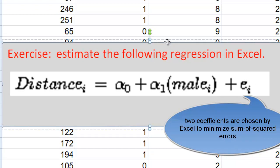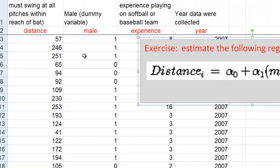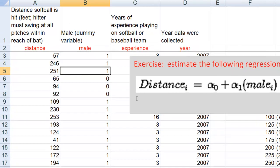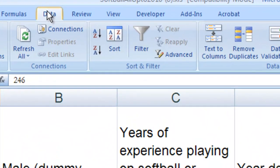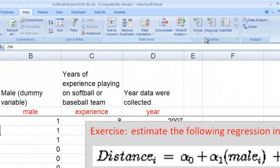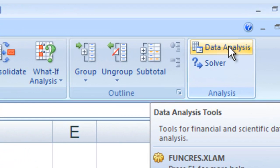We're going to do that as follows. Just follow these steps and you can get the values of alpha zero and alpha one. First we're going to go up to the data menu and we're going to go all the way to the right to the data analysis toolbox.